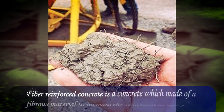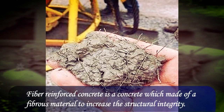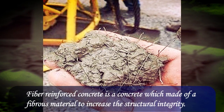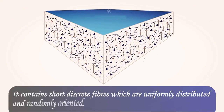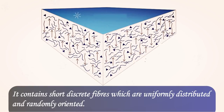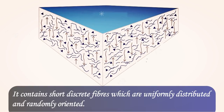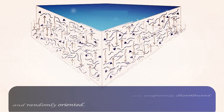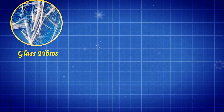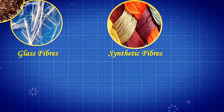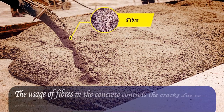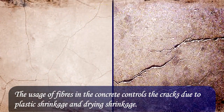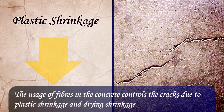Fiber reinforced concrete is a concrete made of a fibrous material to increase the structural integrity. It contains short discrete fibers which are uniformly distributed and randomly oriented. The types of fibers utilized may be glass fibers, synthetic fibers, steel fibers, and natural fibers.